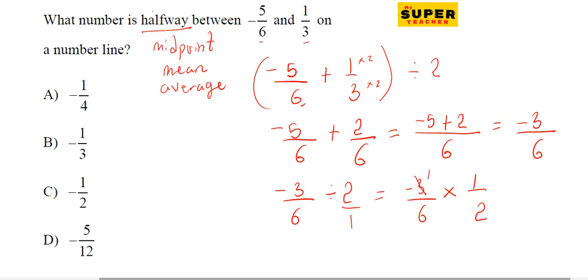We can cancel: 3 becomes 1, 6 becomes 2. So 1 times 1 is negative 1, and 2 times 2 is 4, giving us negative 1 over 4. So the answer is A.